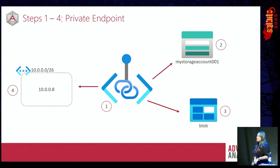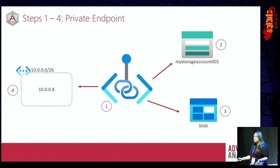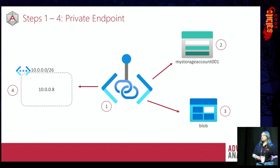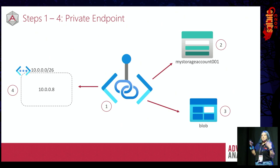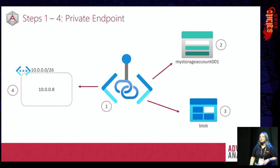Step four is the virtual network. We know that at its core a private endpoint is a private IP address, so it needs to get that private IP address from somewhere. You need to provide a virtual network and tell Azure to get the IP address from that particular virtual network. So when people say 'my storage account is in a virtual network,' what they mean is there is a private endpoint associated with that storage account whose IP address comes from that virtual network.